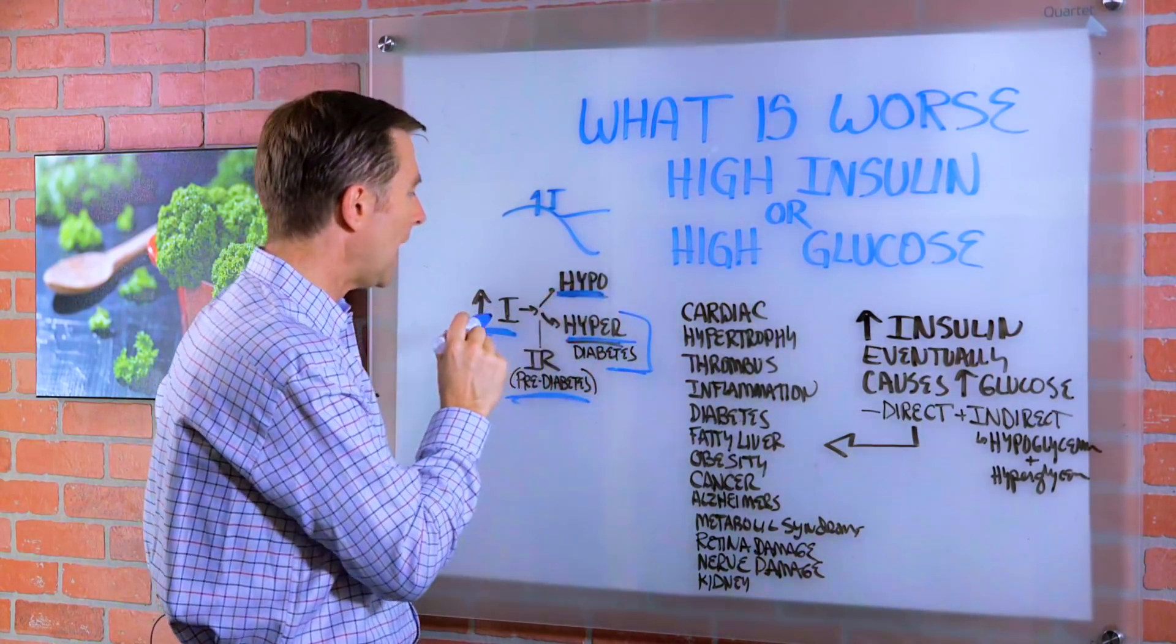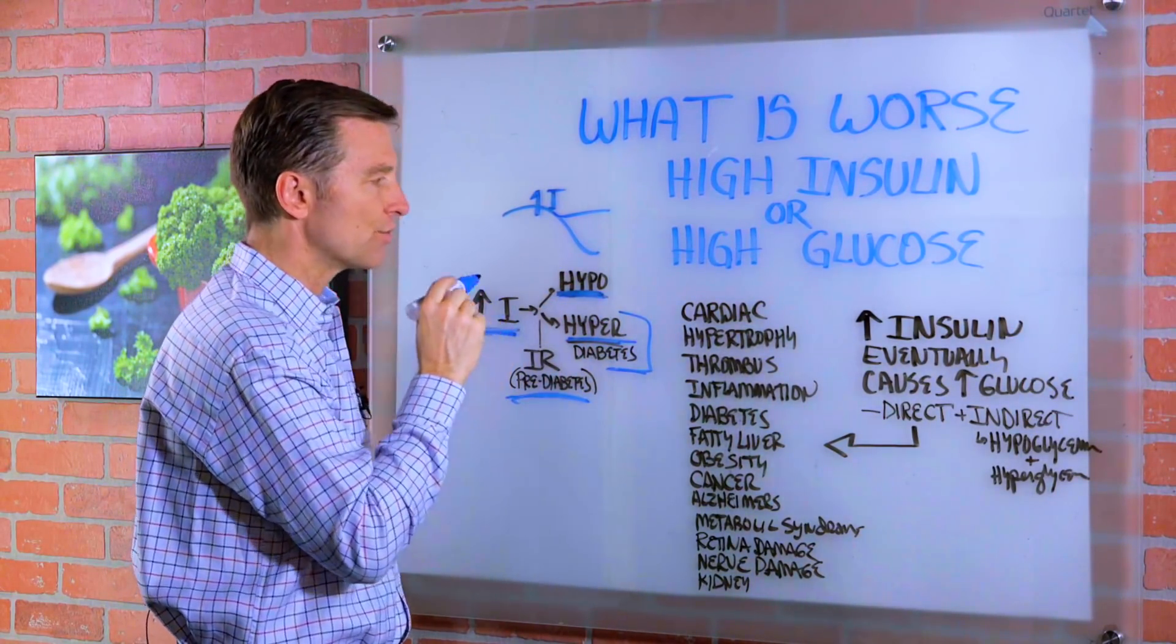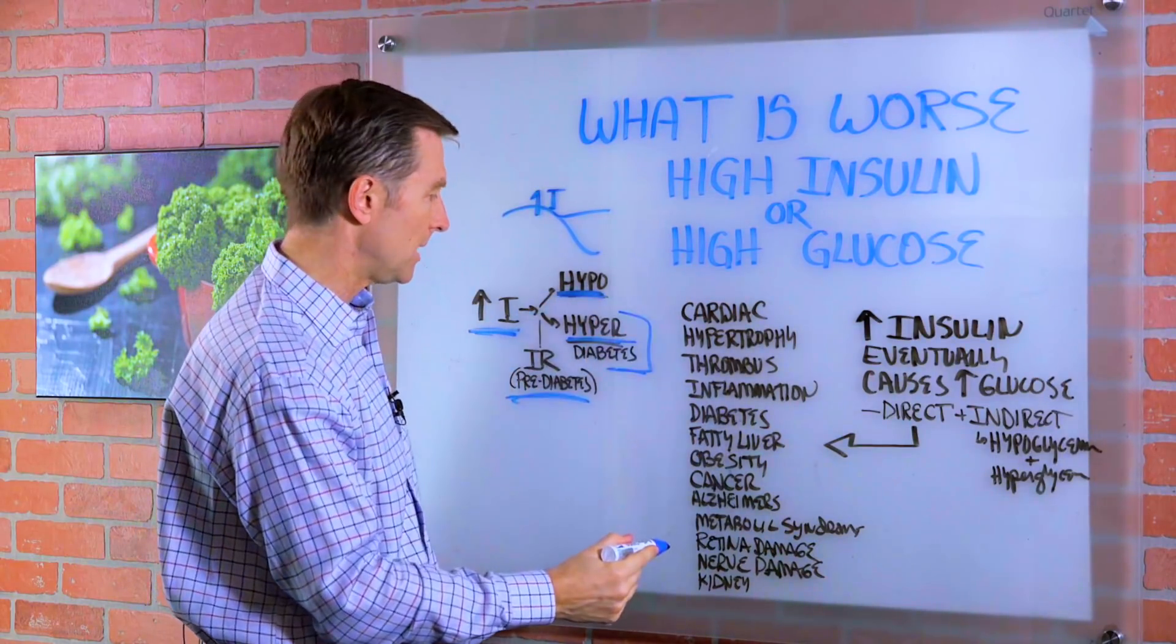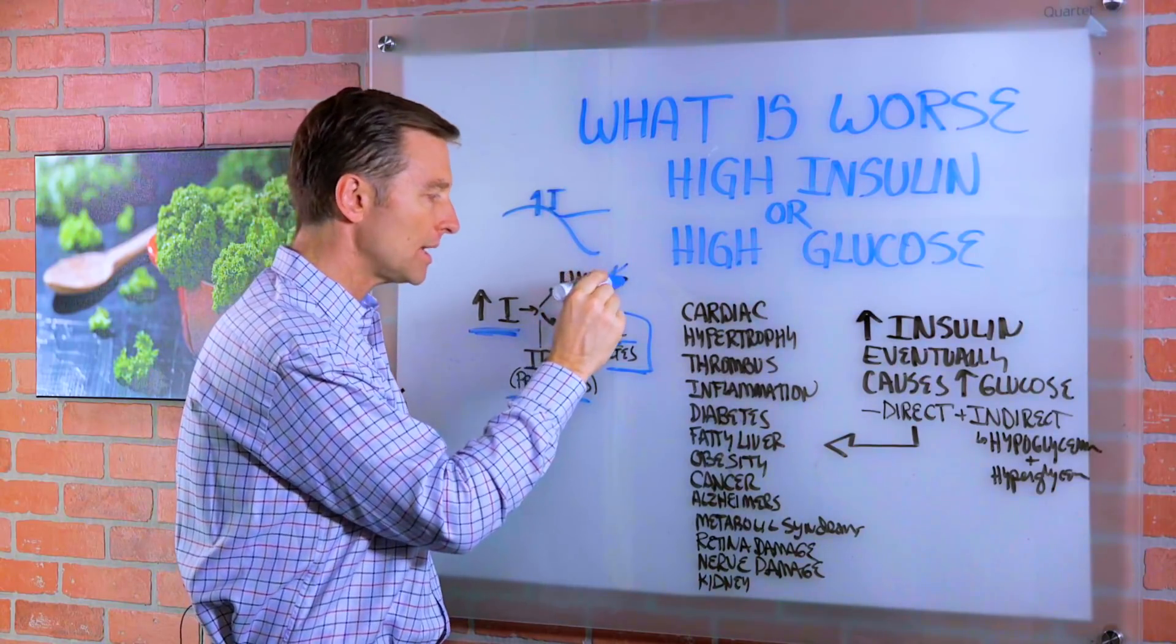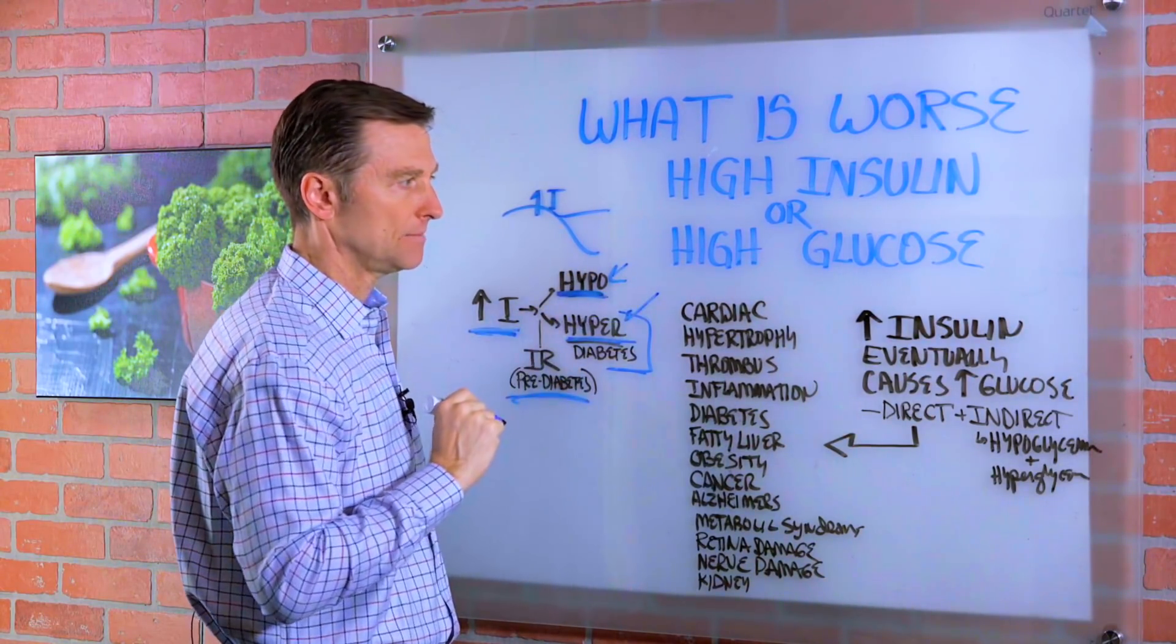So high amounts of insulin has direct side effects, which we're going to talk about, and indirect side effects, depending on what's happening with hypoglycemia or hyperglycemia.